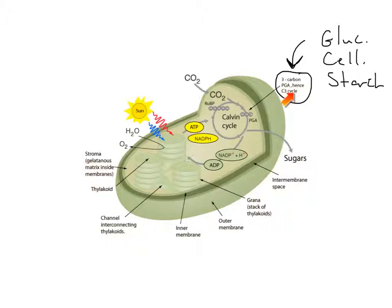Again, the three-carbon sugar then, through other chemical reactions, can make glucose, cellulose, or starch, or other biomolecules. So that's the overview for photosynthesis, specifically C3 photosynthesis.